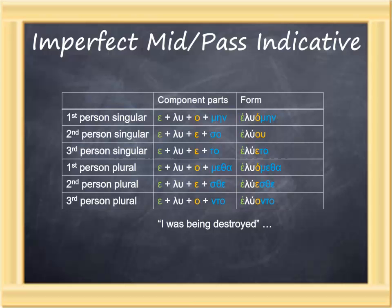Notice the four parts: augment, stem, connecting vowel, ending. Let's look at each of the forms in turn. Eluomēn, first person singular, I was being destroyed. The second person singular, eluo—eluo looks a little odd because the actual personal ending is so, but the sigma drops out and epsilon plus omicron contract together to form u—meaning you singular were being destroyed. Elueto, he, she, or it was being destroyed. Eluometha, we were being destroyed. Eluesthe, you plural were being destroyed. Eluonto, they were being destroyed.